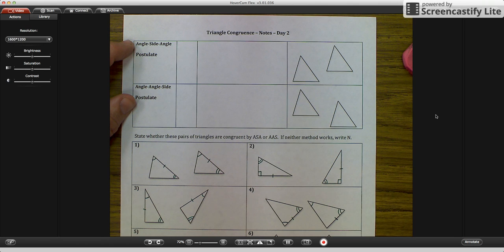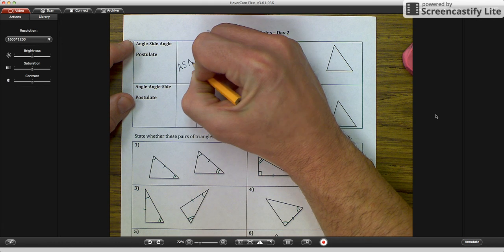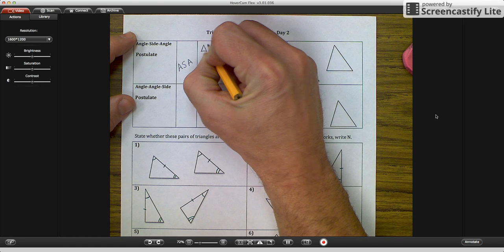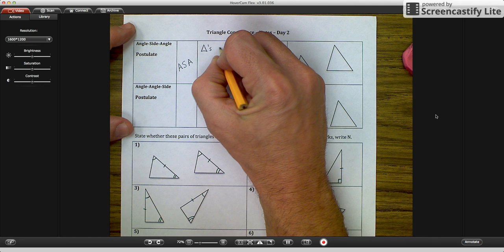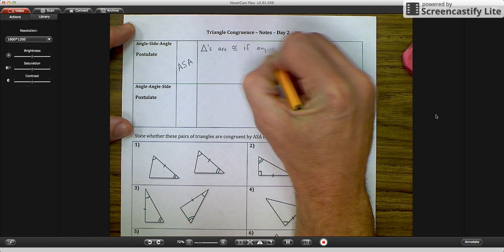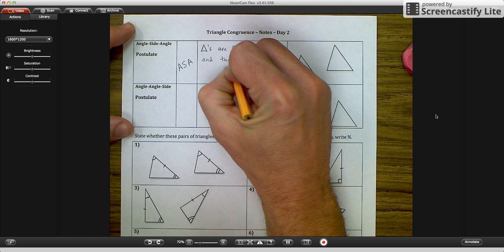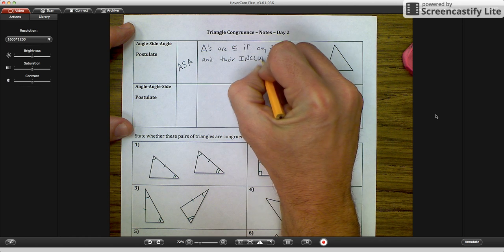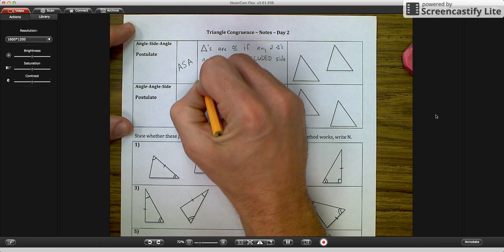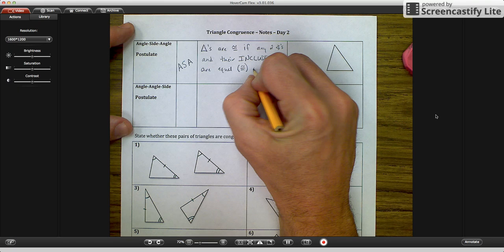So angle side angle postulate talks about triangles and triangle congruence. The abbreviation for angle side angle, I'm going to try and do this so you can see it, is ASA. And the angle side angle postulate says triangles are congruent if any two angles and their included side are equal. Another word for equal is congruent in both triangles.